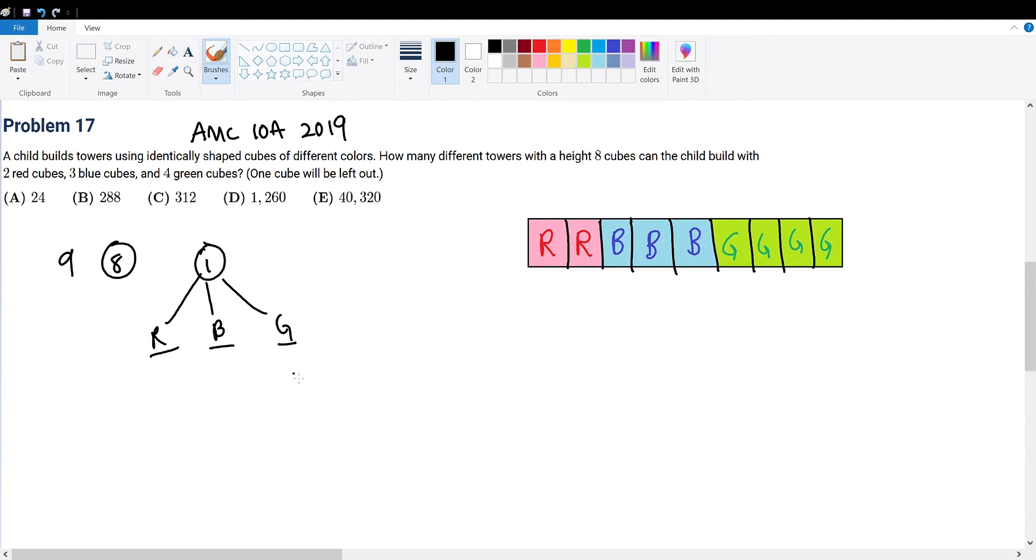With casework, we sum each case. So let's call case 1 when we exclude red, case 2 when we exclude blue, and case 3 when we exclude green.